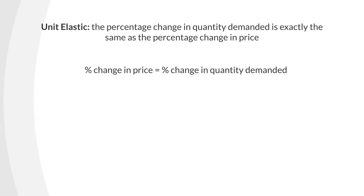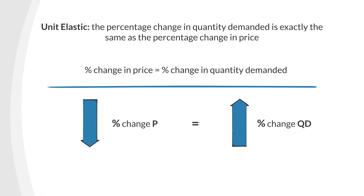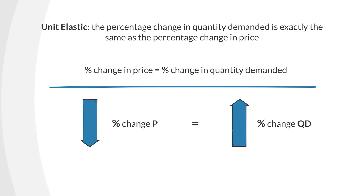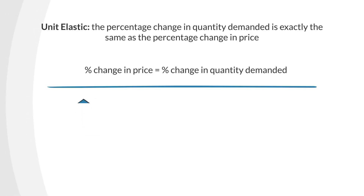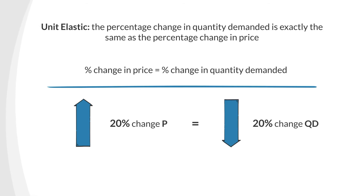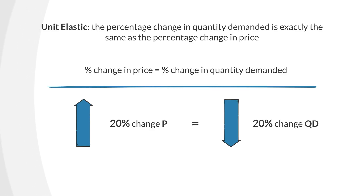There's another possible combination. If the percent change in a good's price is offset by an equal percent change in the quantity demanded, economists would label the demand for that good as unit elastic. So if the price of a good increases by 20 percent and the quantity demanded decreases by 20 percent, the demand for that good is considered unit elastic.